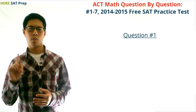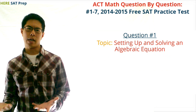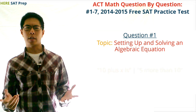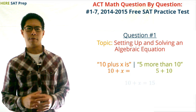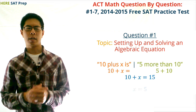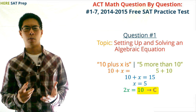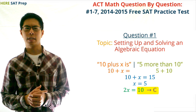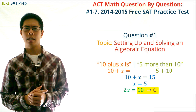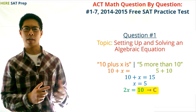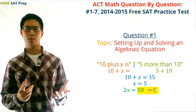Question number one. The topic of this question is setting up and solving an algebraic equation. We first recognize that the word 'is' means equals. So '10 plus x is' becomes 10 plus x equals, and 'five more than 10' becomes 5 plus 10. So we have 10 plus x equals 5 plus 10, which simplifies to 10 plus x equals 15. Then we subtract 10 from both sides to get x equals 5.